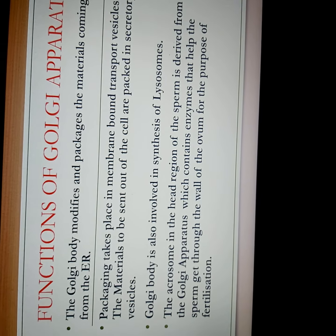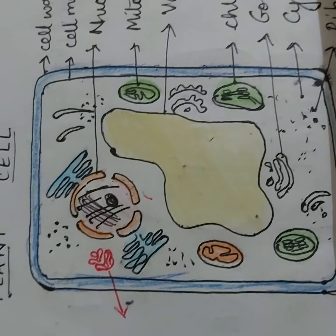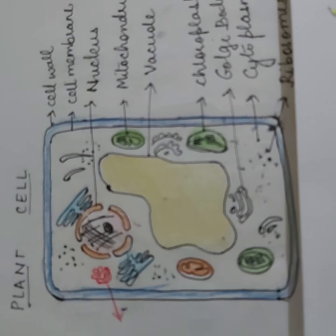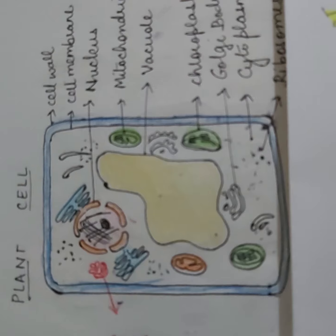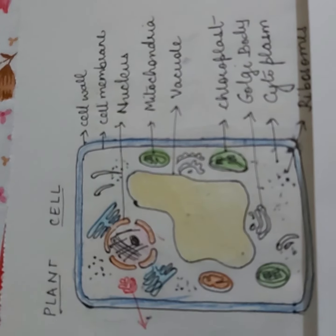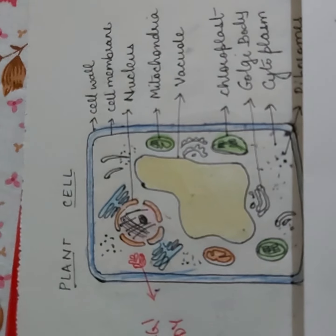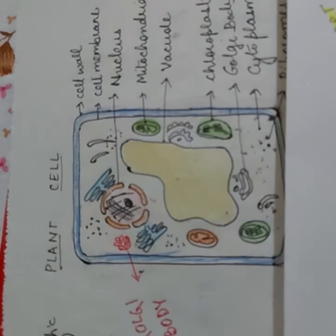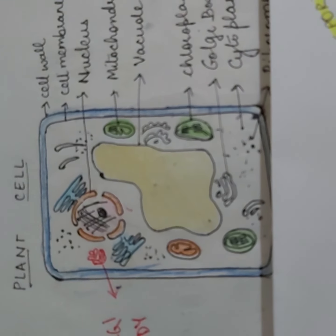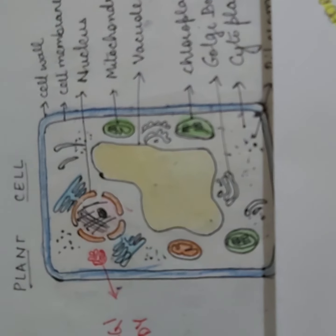Now we come to the next organelle: plastids. Plastids are generally present in plant cells and algae and are absent in animal cells, because plastids contain pigments that trap solar energy for making food or impart colors — a characteristic feature of plant and algal cells. Plastids can be of two types: colored plastids and non-colored or colorless plastids.